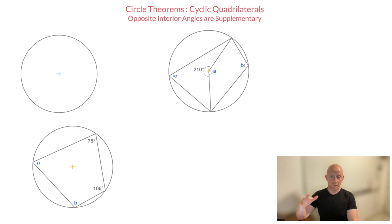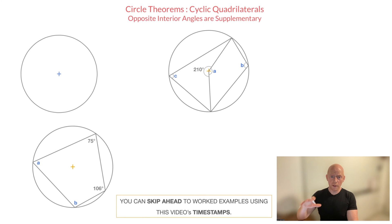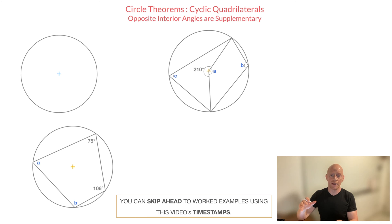Hi everyone, I'm John from Radford Mathematics, and in this video on circle theorems, we're going to be talking about cyclic quadrilaterals. More specifically, we're going to be using the fact that the opposite interior angles of a cyclic quadrilateral are supplementary, meaning they add up to 180 degrees.